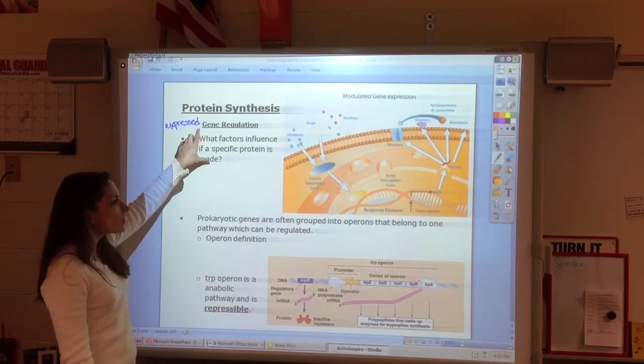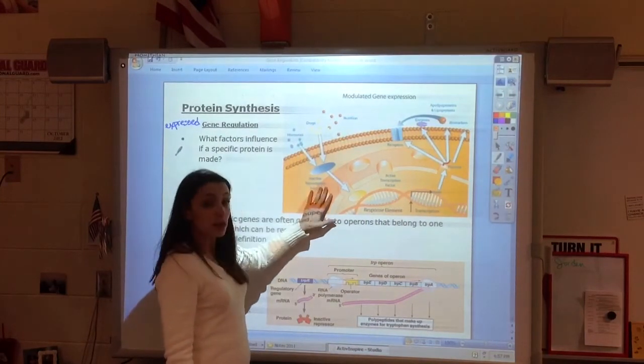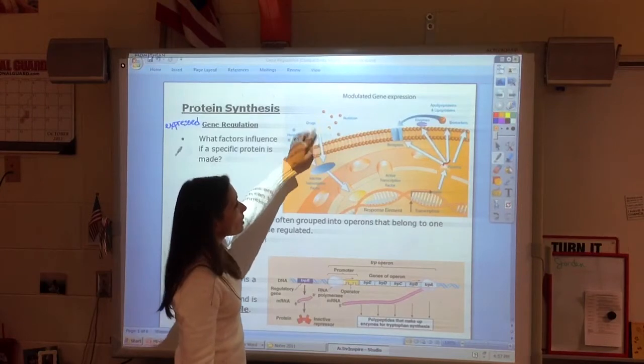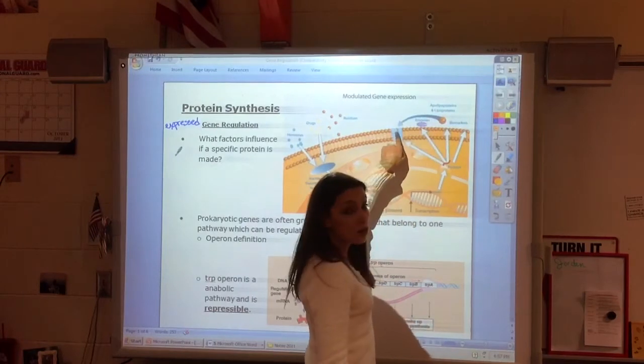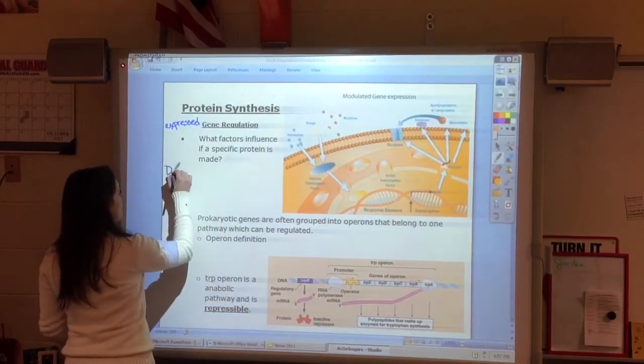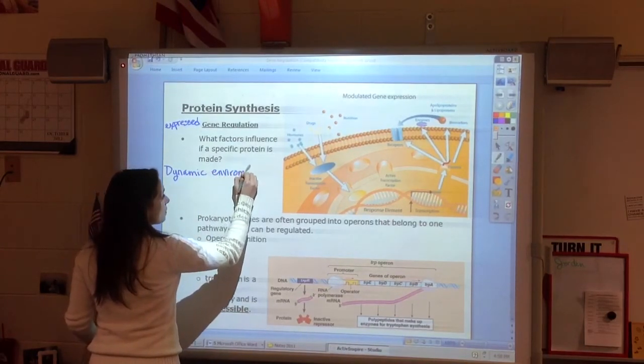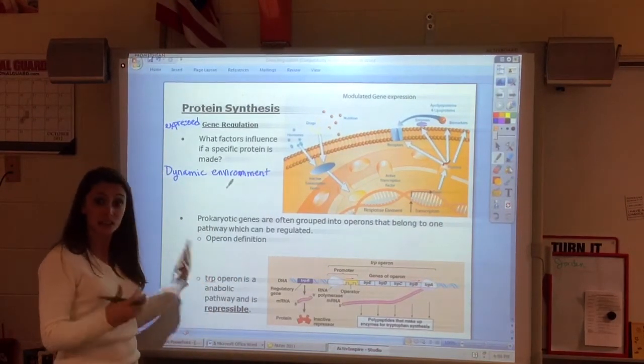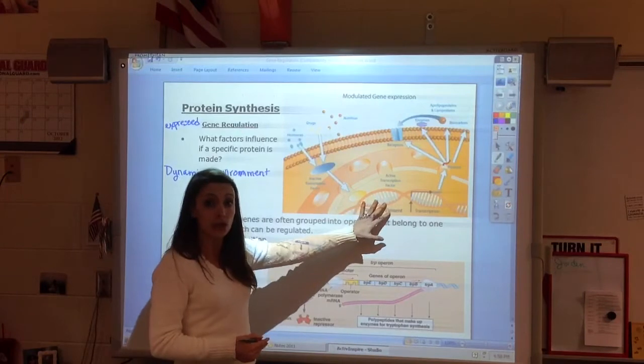When we look at whether a gene is used, in this diagram here you're seeing a cell, a nucleus, the DNA. What you're seeing come into the cell are things like hormones and drugs and nutrition, lipoproteins and hormones. These things are all going to be influencing the cell. Because we have a dynamic environment, because cells are experiencing a changing environment, they need to be able to respond. One of the ways they respond is by making proteins in response.